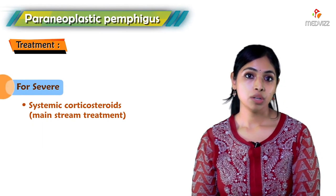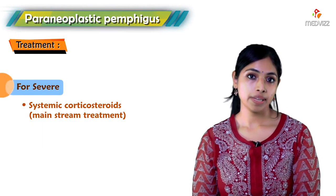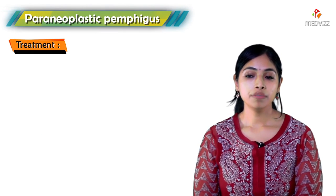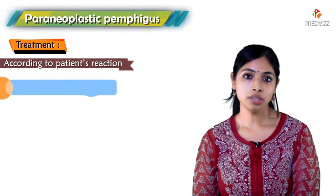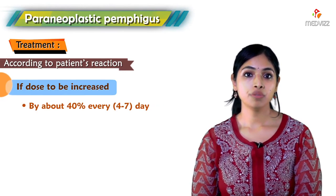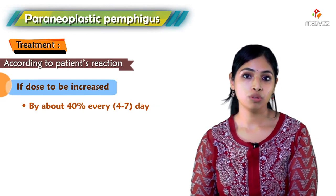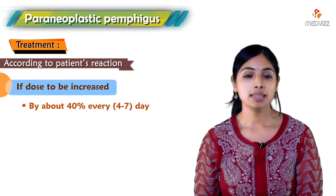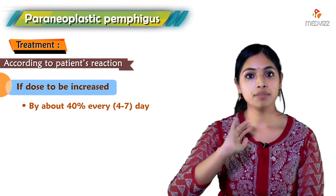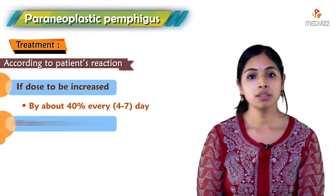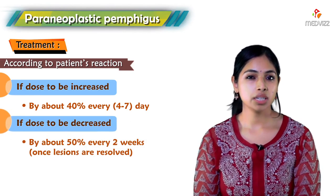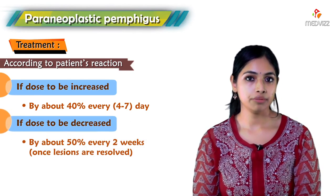For moderate disease the dose is about 60 to 80 mg per day. For very severe disease, doses of 80 to 120 mg per day are used. Based on patient response, we increase doses by about 40 percent every four to seven days. Once lesions resolve, the dose is decreased by 50 percent every two weeks.